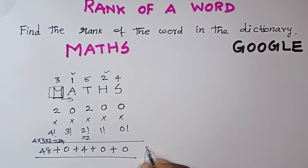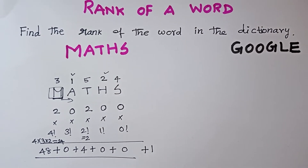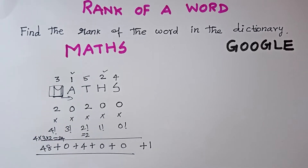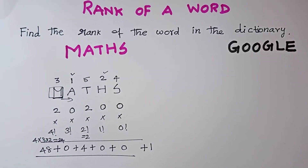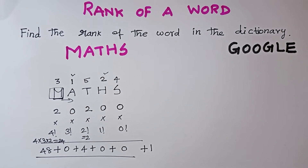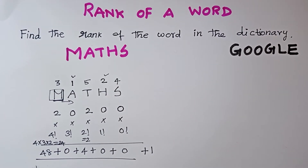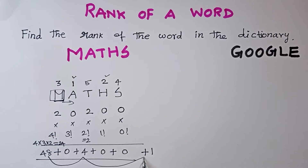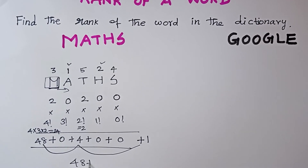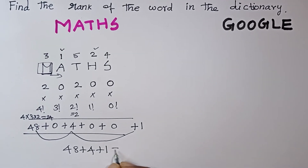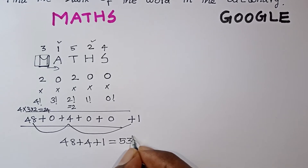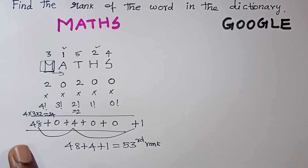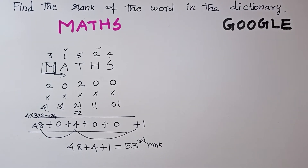So 5! gives 48 plus others. Adding up: 6! and 8! contribute, and 52 plus 1 is 53. So the 53rd rank is where we find the word in the dictionary. This is the procedure for the without repetition method.